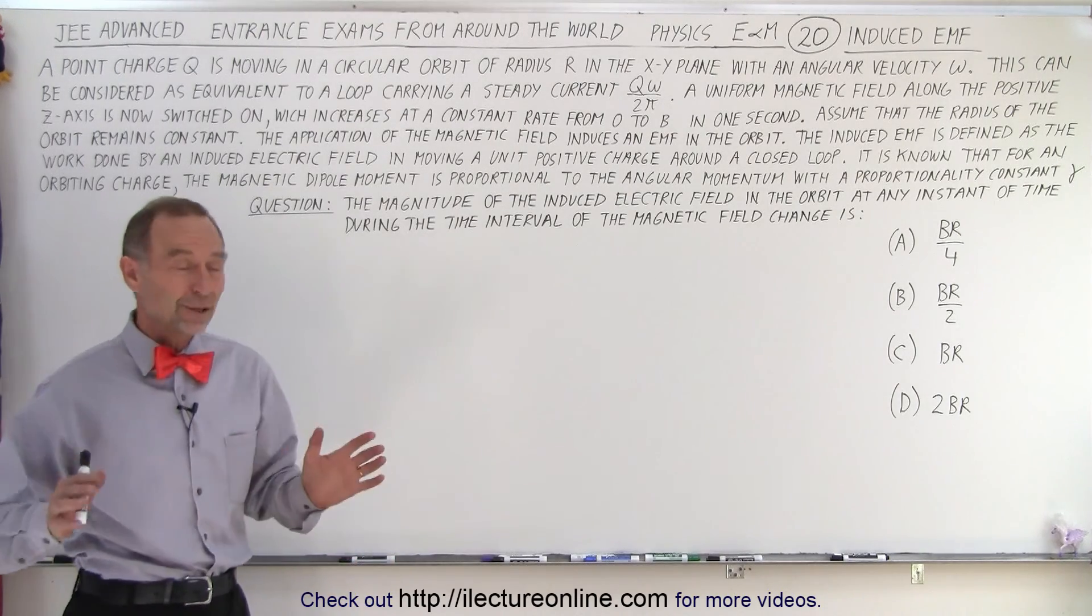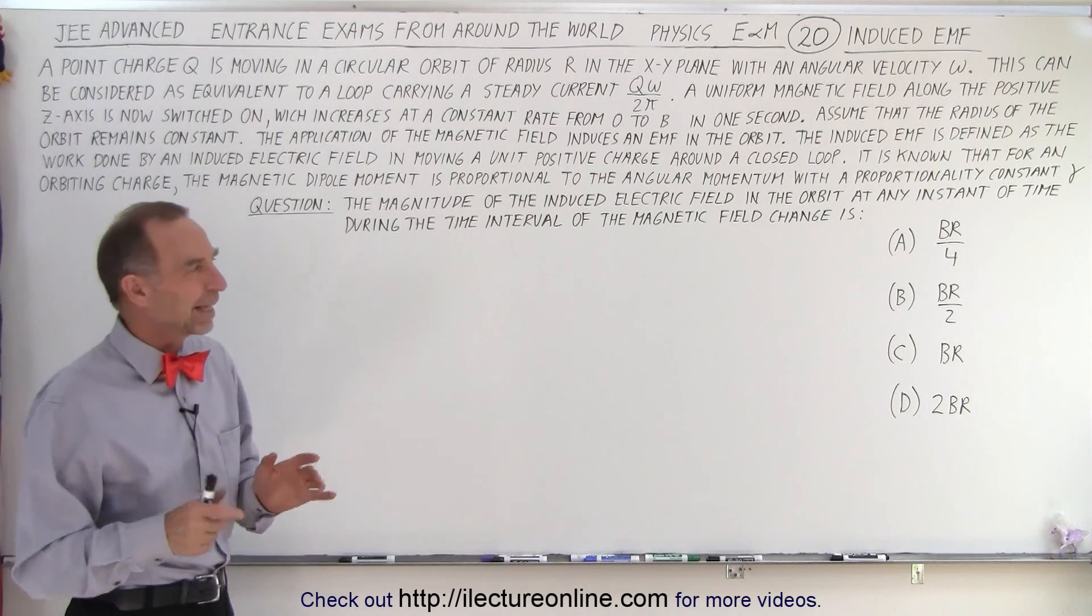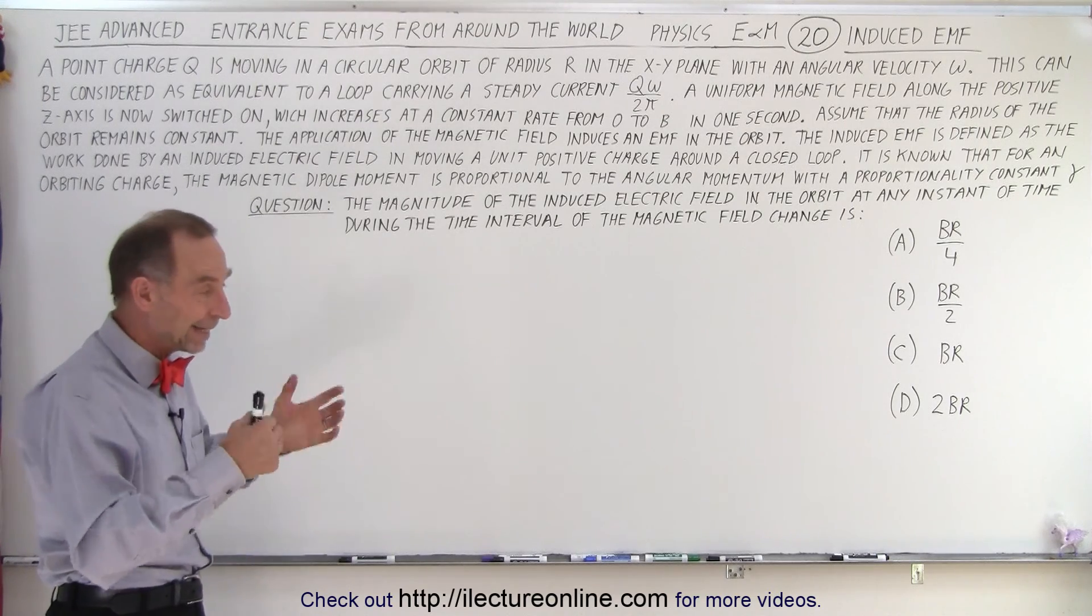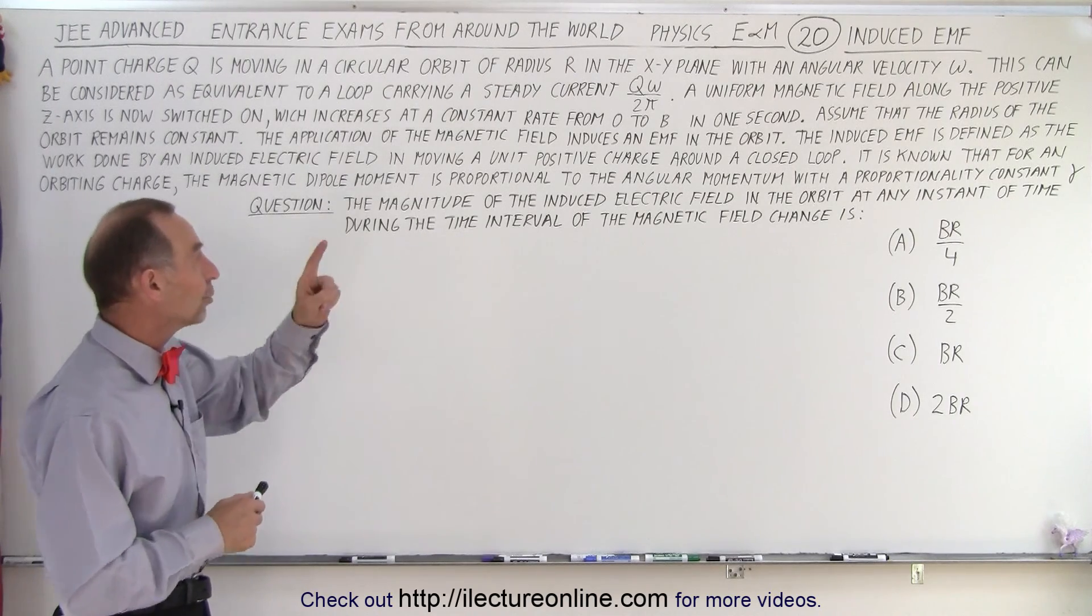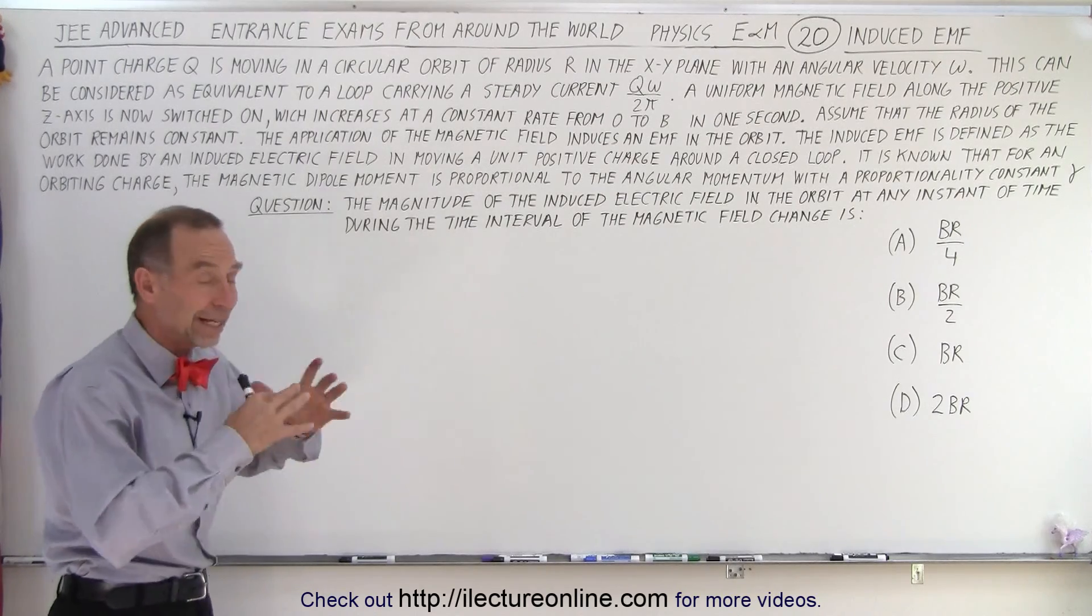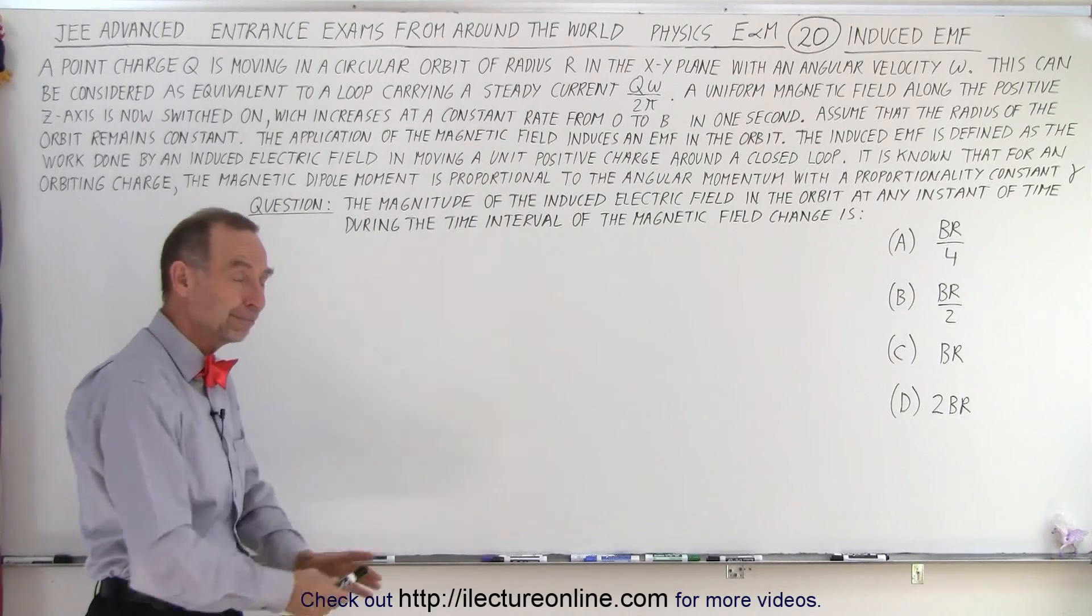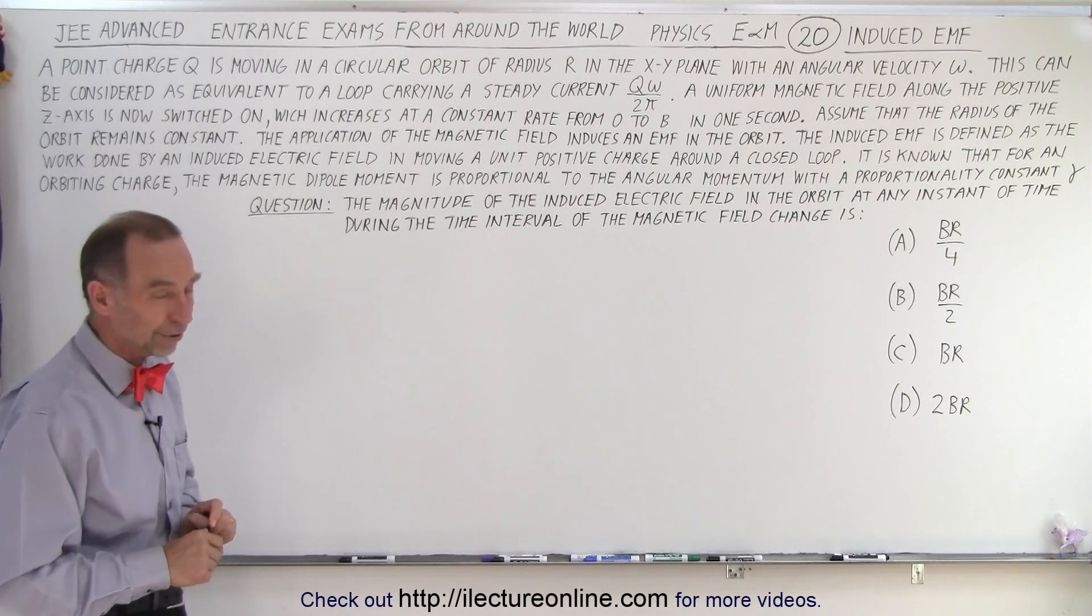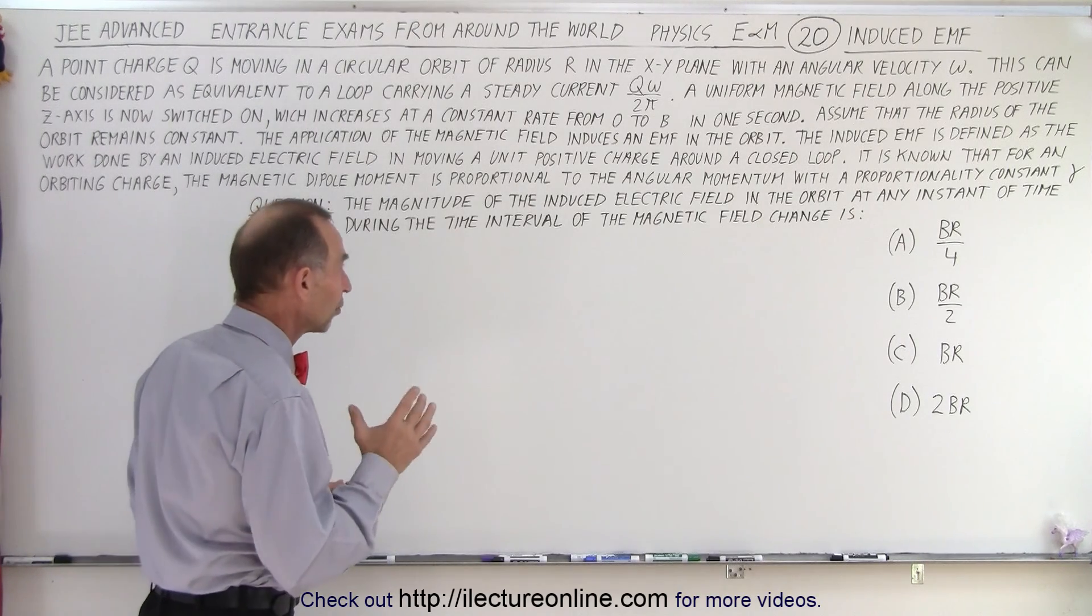Notice it probably took me a minute or two just to read the question and much of that information is probably not even needed. That alone makes it more difficult. The key here is that we have an orbiting charge inside a changing magnetic field that induces an EMF and the magnitude of that induced EMF in the orbit at any instant of time during the time interval of the magnetic field change while the magnetic field is going from zero to B, well we have to solve it. We have to figure out the magnitude of that induced electric field.